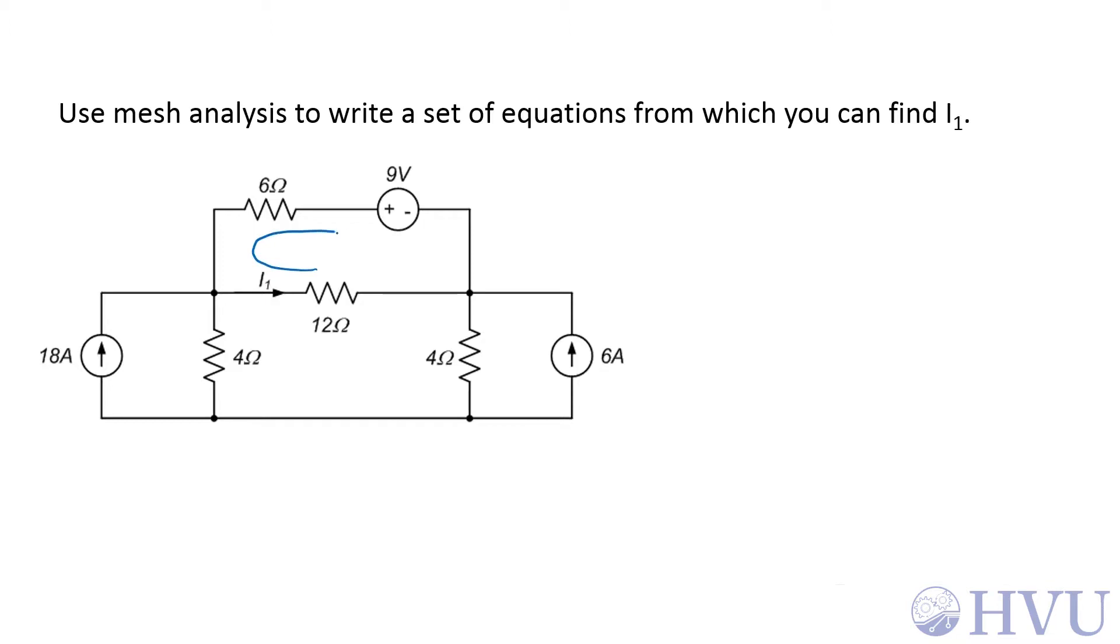I'm going to pick the same mesh loops that I did before. So this is going to be I1, and this will be I2. But I'm going to pick different constrained loops. For my first one, I still need to go through this 18-amp source, but beyond that it doesn't matter where it goes. I think I'll loop through there. So this is 18-amps. It accounts for this current and matches its magnitude and direction.